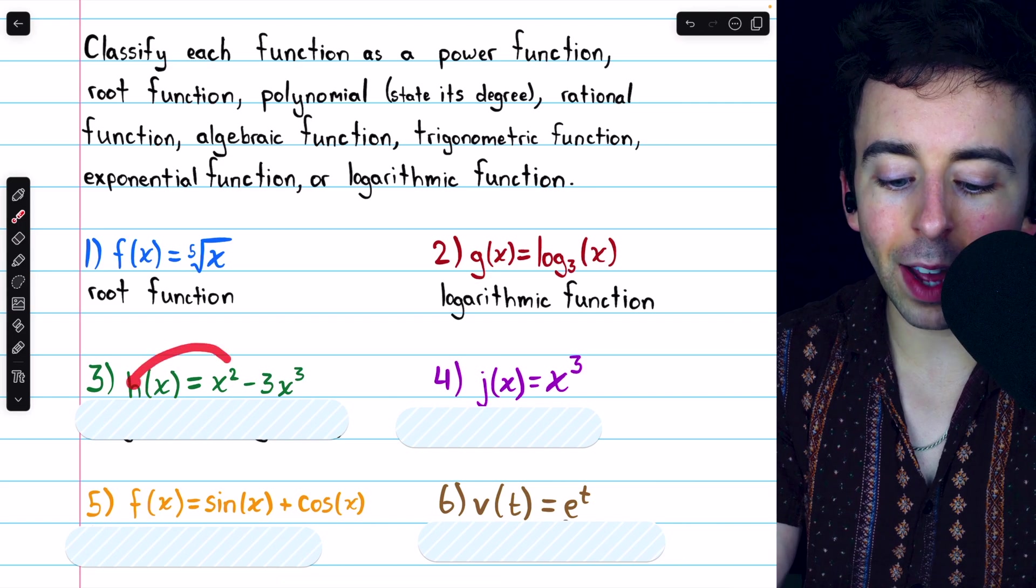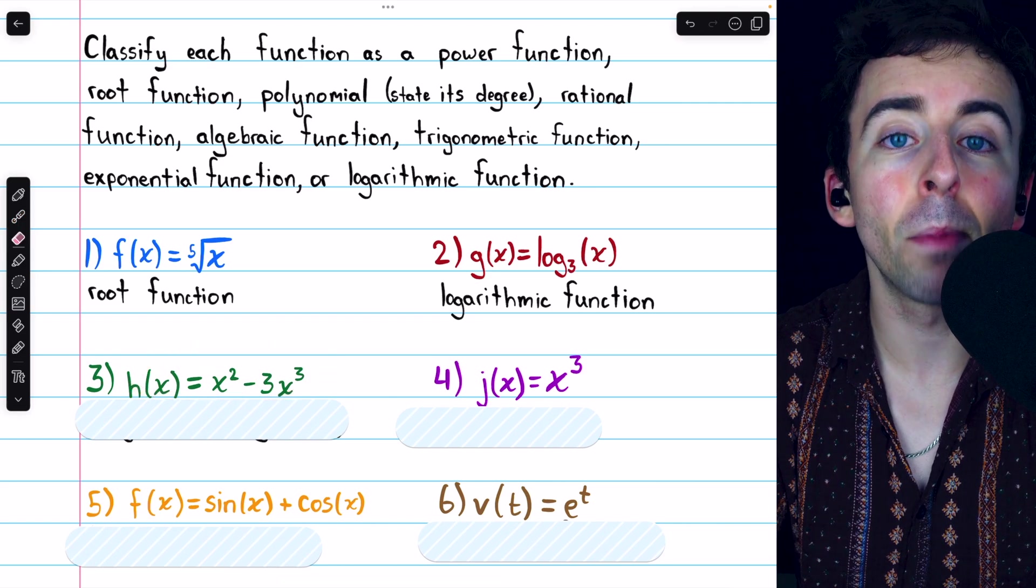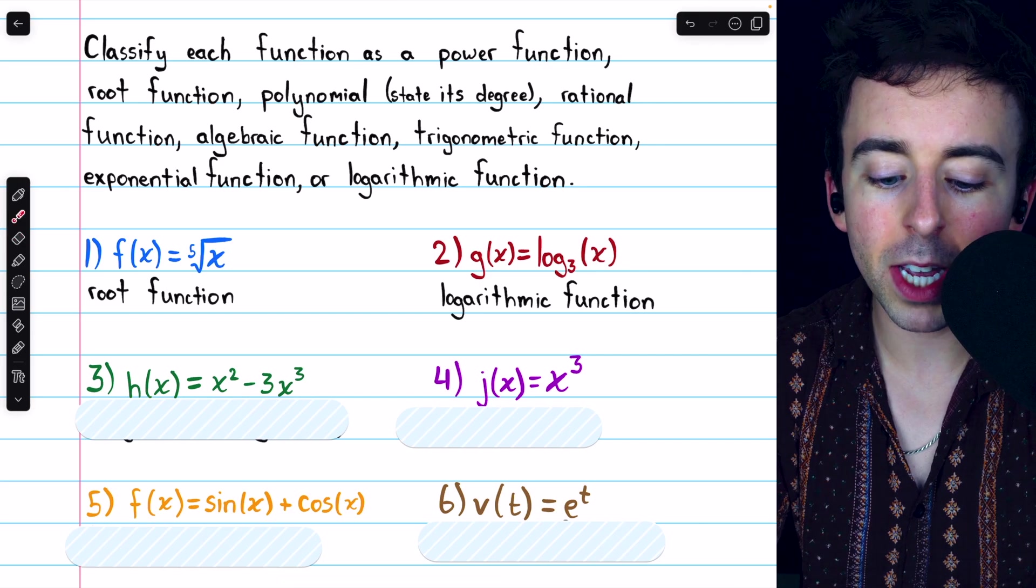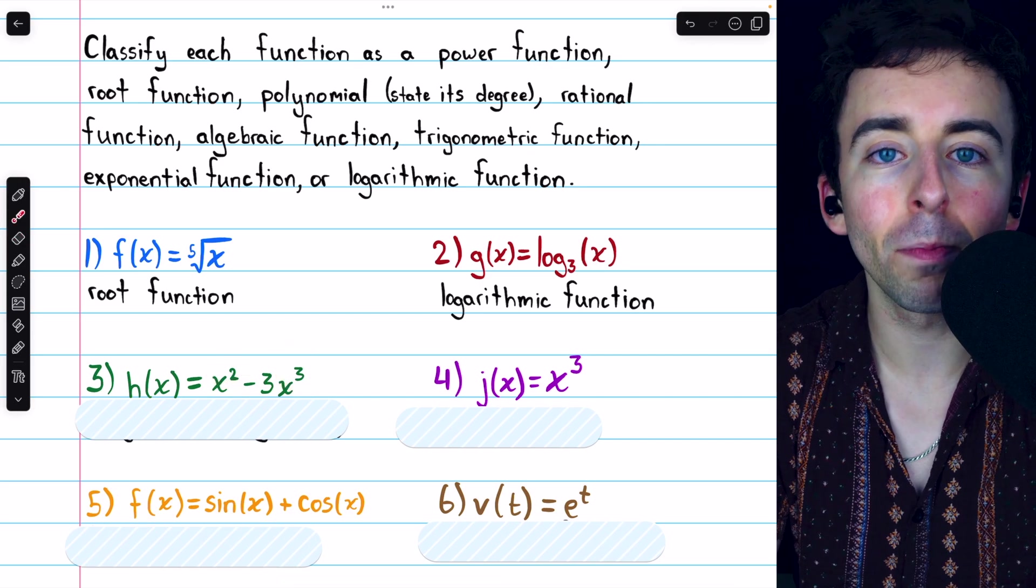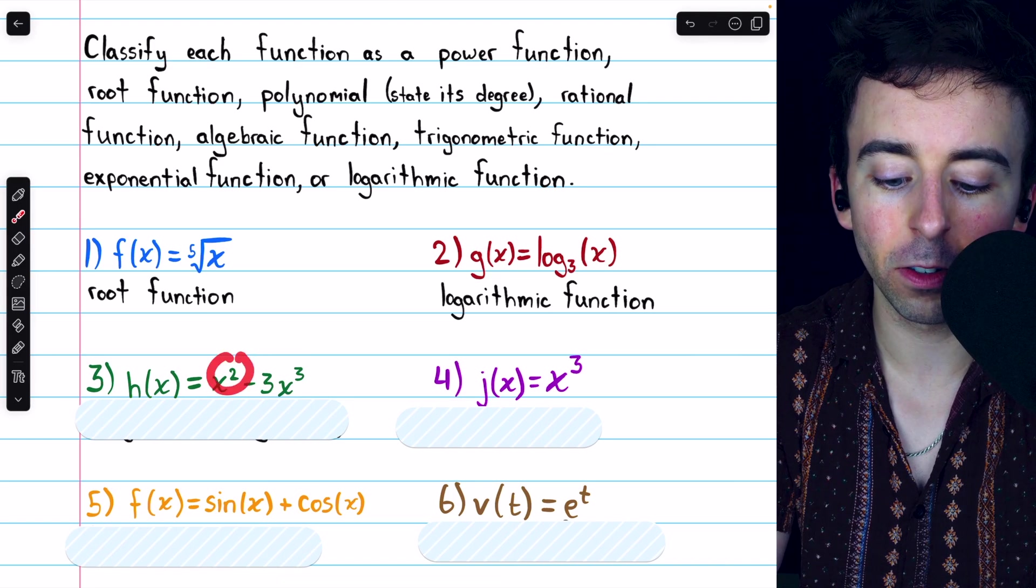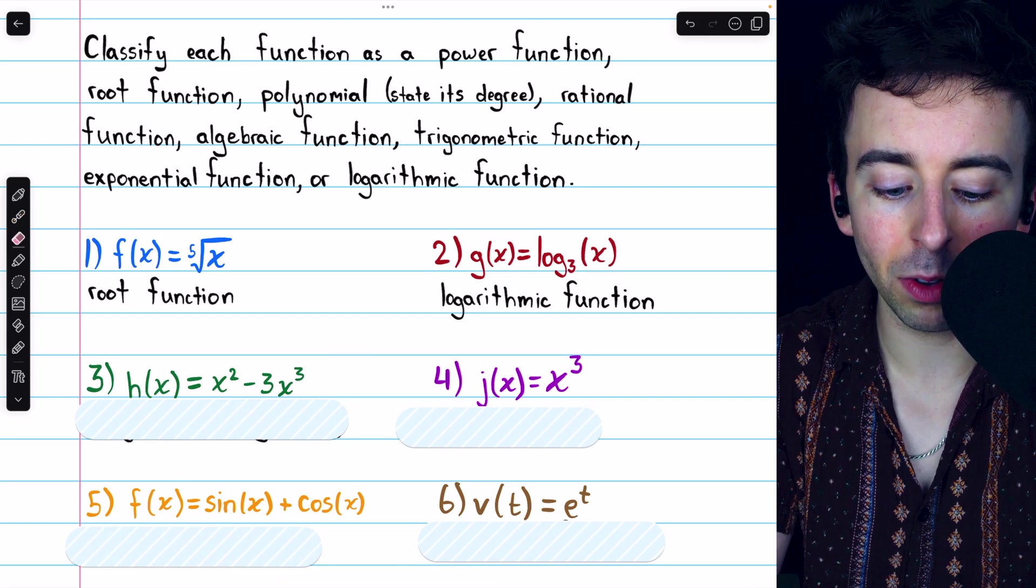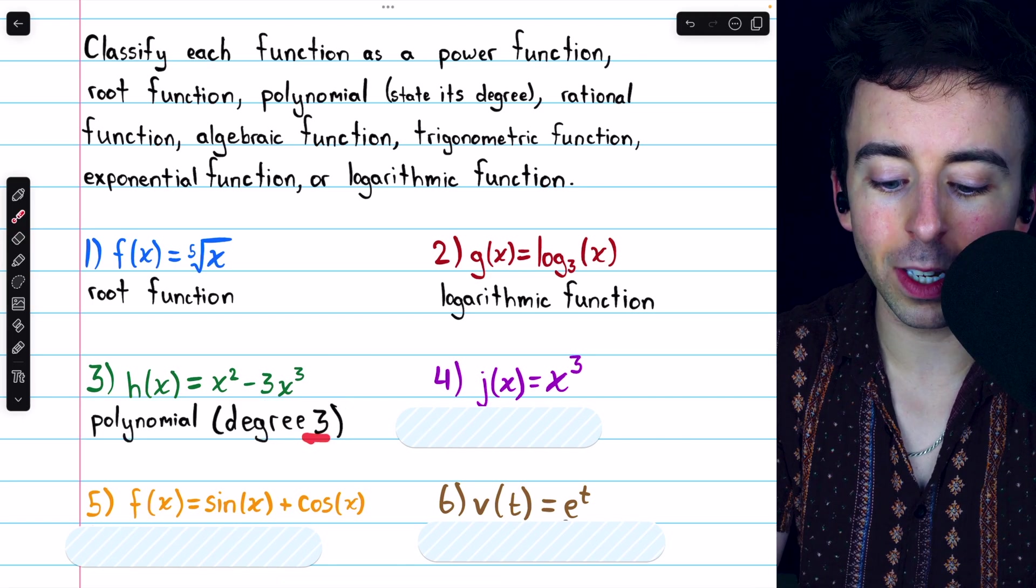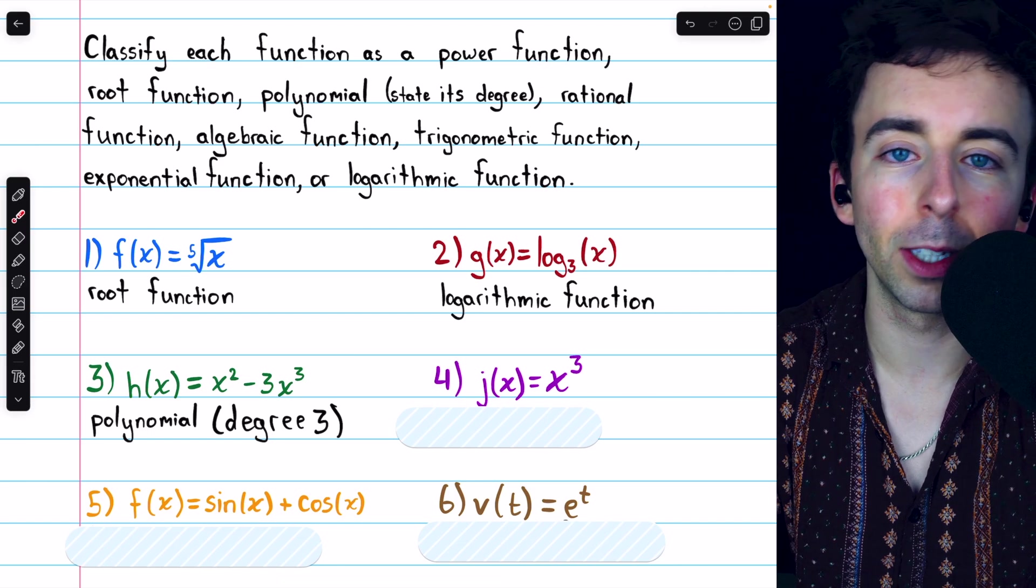Number three, h of x equals x squared minus three x cubed. This is a polynomial. In a polynomial, every variable must have a non-negative integer power, which we see is the case here, two and three. The highest power is the degree of the polynomial. So this is a polynomial and its degree is three. That's the highest power of a variable in this polynomial.